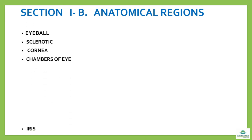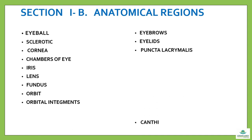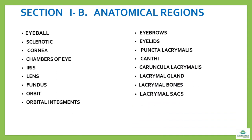Section 1b: anatomical regions includes eyeball, sclerotic, cornea, chambers of eye, iris, lens, fundus, orbit, orbital integuments, sacs, eyebrows, eyelids, puncta lacrimalia, canthi, caruncula lacrimalia, lacrimal gland, lacrimal bones, and lacrimal sacs.